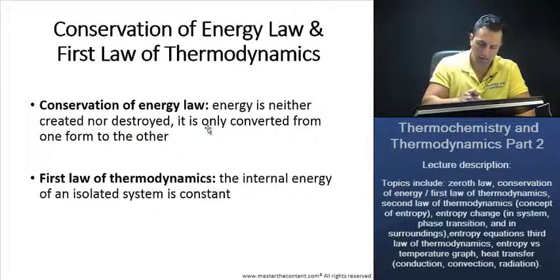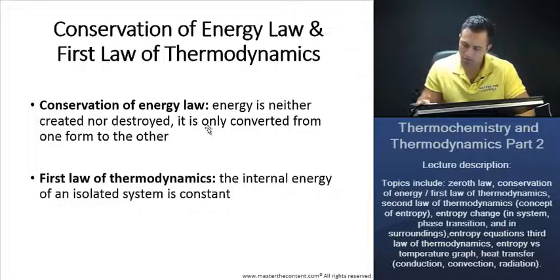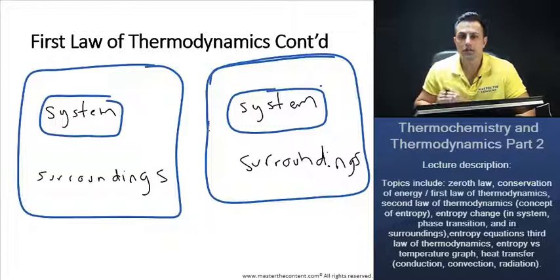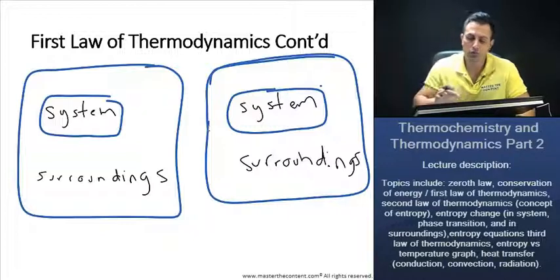We just said that the internal energy of an isolated system is constant. If the internal energy of an isolated system is constant, yet now it wants to exchange energy with its surroundings, it can do so through two processes.